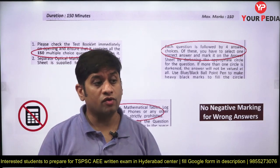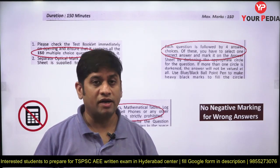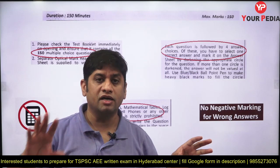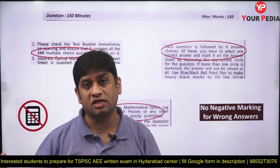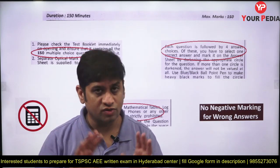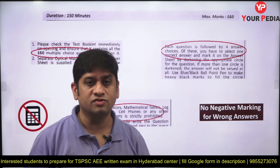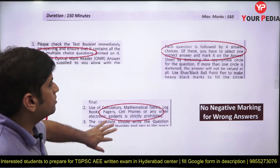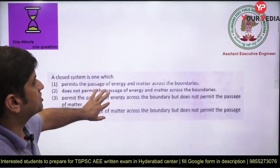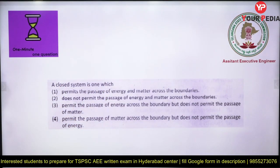No calculator, no negative marking, one minute per question — this decides the difficulty level. You will not get long numericals; you will get a lot of theory and data-oriented questions covering the entire syllabus. If you are very good at GATE, that does not mean you will automatically clear this — the pattern is different. Do not start doing engineering services objective papers either. The pattern is simple, but preparation in the right direction is required.